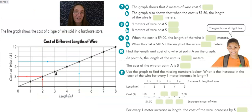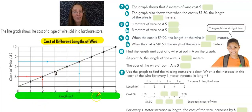Let's take a look at one more line graph together. The line graph shows the cost of a type of wire sold in a hardware store. And the title tells us exactly that. The cost of different lengths of wire. Let's take a look at our different axes. Our horizontal axis down here tells us the length of the wire in meters. And the vertical y-axis over here tells us the cost of the wire in dollars.